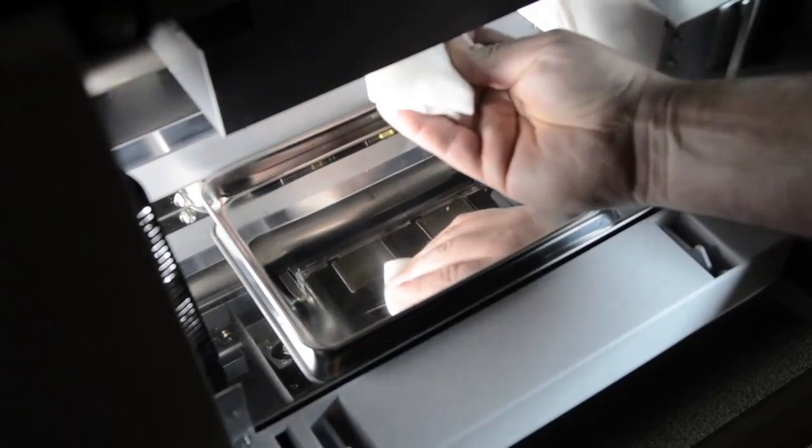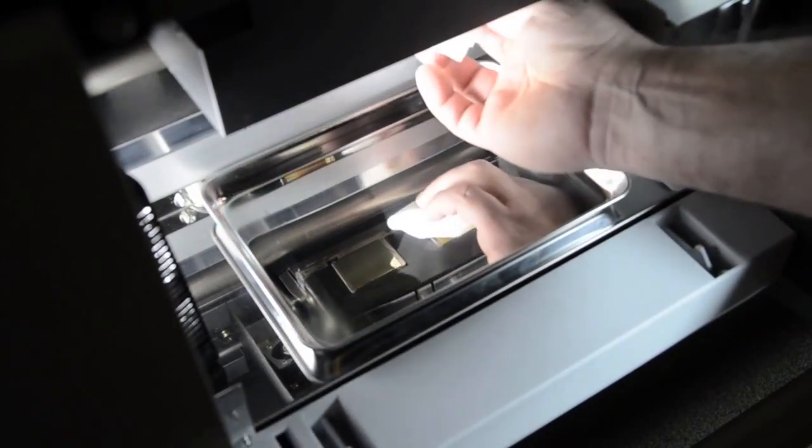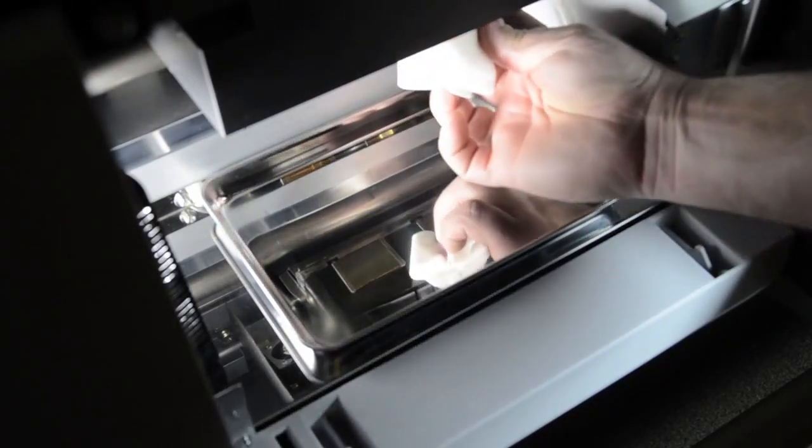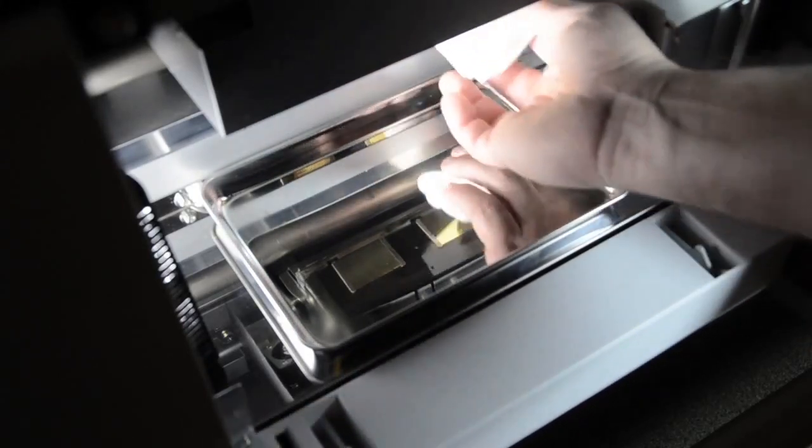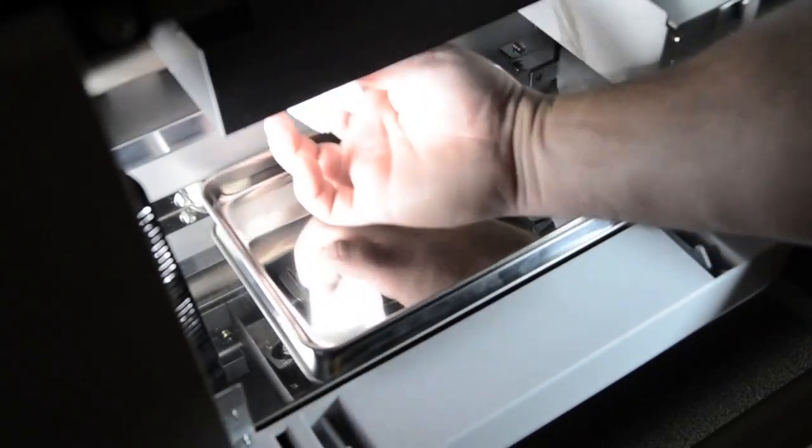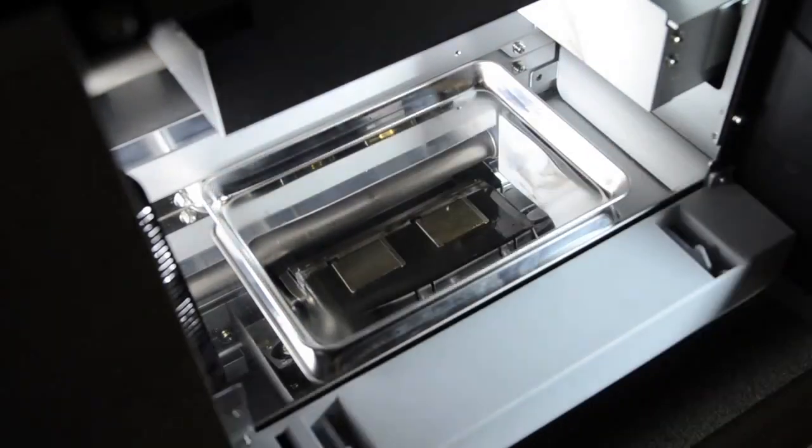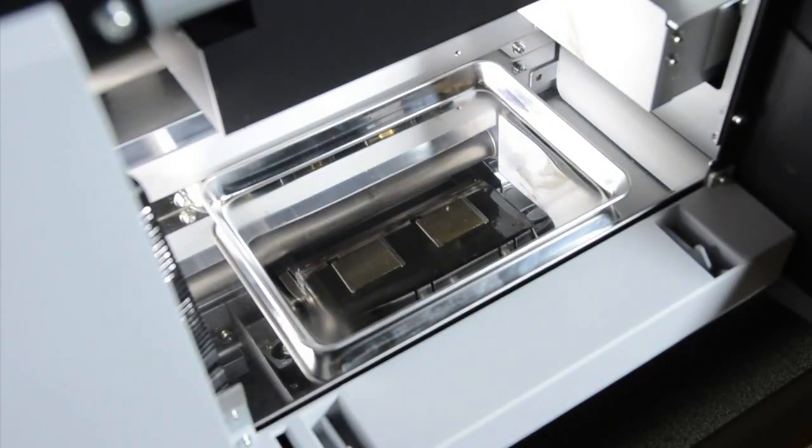From there, you're going to gently take your lint-free rag and wipe any excess fluid and excess ink that has built up on these areas. You want to gently continue rubbing and turning your cloth until no ink or no debris is on your cloth.